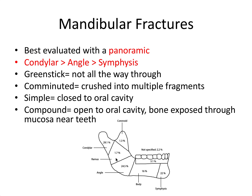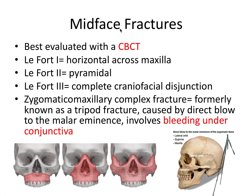Some terms to know for the board exam: greenstick fractures mean it's not all the way through the layer of bone. Comminuted fractures mean it's crushed into multiple fragments. A simple fracture means it's closed to the oral cavity, whereas a compound fracture means it's open to the oral cavity — in other words, the bone is exposed through the mucosa near the teeth.